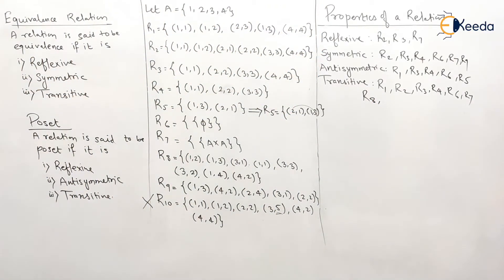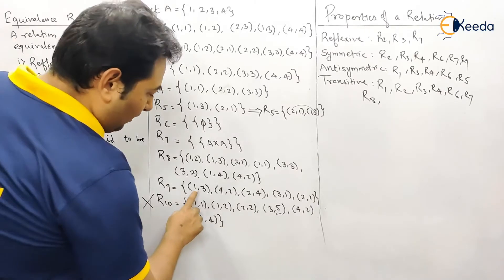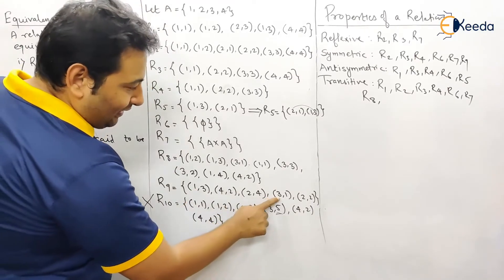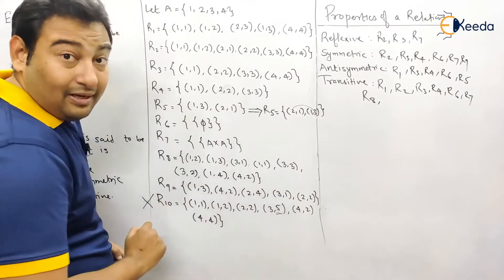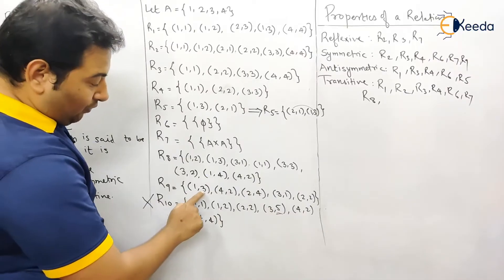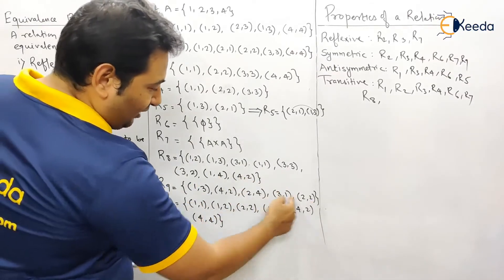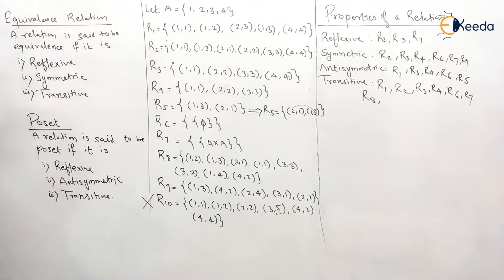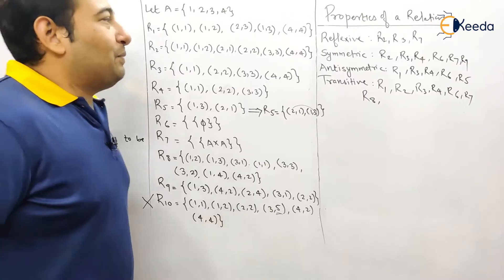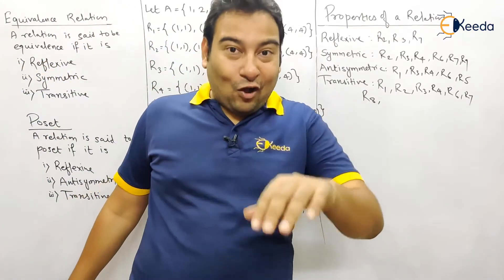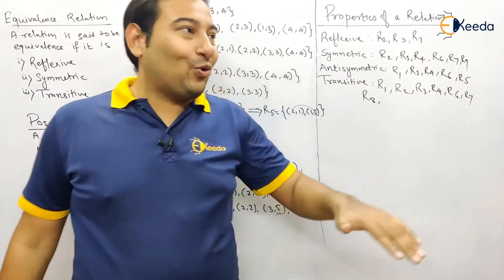For R9: (1,3) and (3,1) means (1,1) must be present — but (1,1) is not in R9 — therefore R9 is not transitive. That completes the transitivity check for all relations.